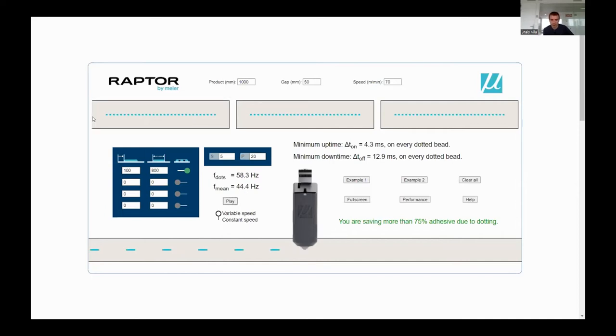But on average the frequency is lower than that - it's 44 hertz, so 44 dots per second on average, because one cycle of application is from here to here. Some of the time is idle time, I'm not dotting at all, so the average frequency is lower. When I say minimum uptime of 4.3 milliseconds and minimum downtime of 13 milliseconds, that means it takes 4 milliseconds opening the valve to produce this adhesive dot, and it takes 13 milliseconds between one dot and another. I can actually change that live, and these are the calculations that people need to make before offering this product.